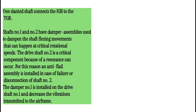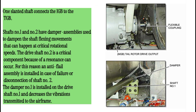Drive shaft number two is a critical component because resonance can occur. For this reason, an anti-flail assembly is installed in case of failure or disconnection of shaft number two. Damper number one is installed on drive shaft number one and decreases the vibrations transmitted to the airframe.